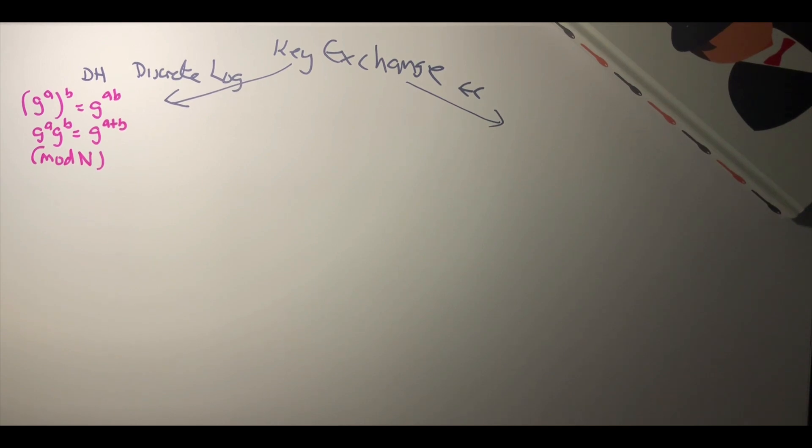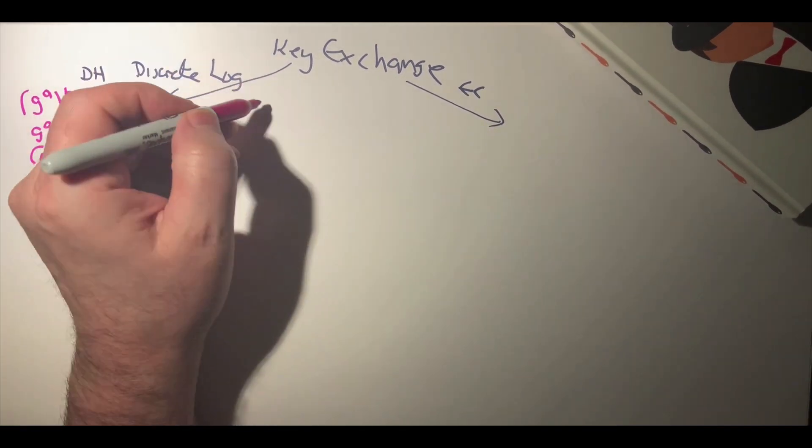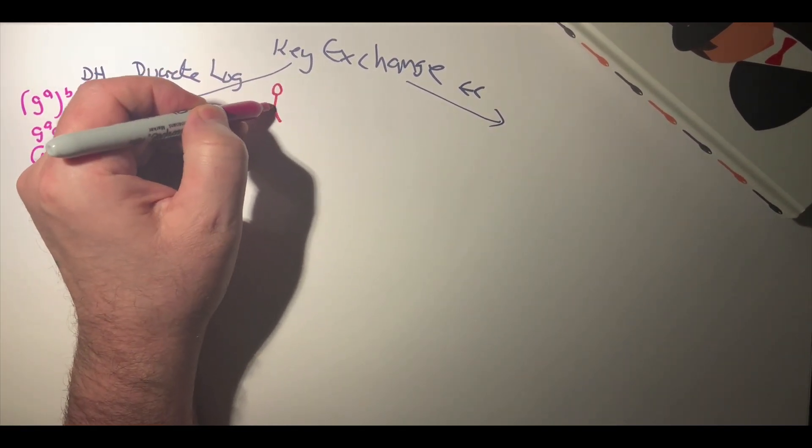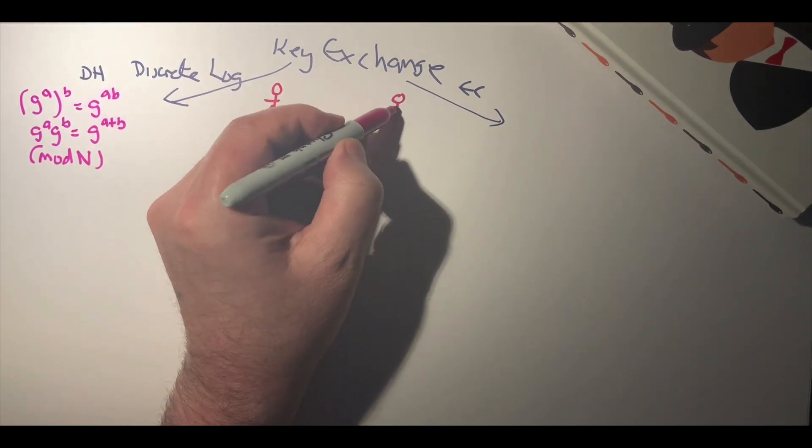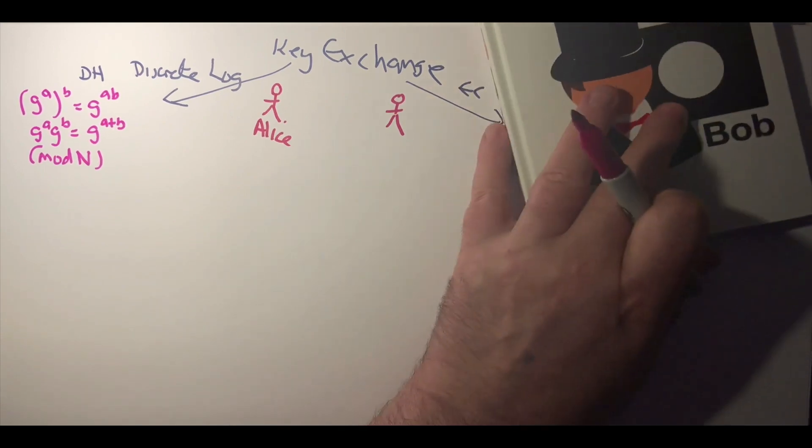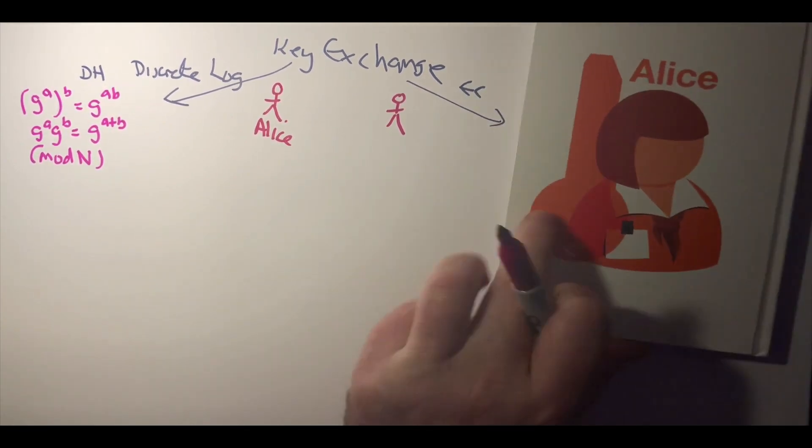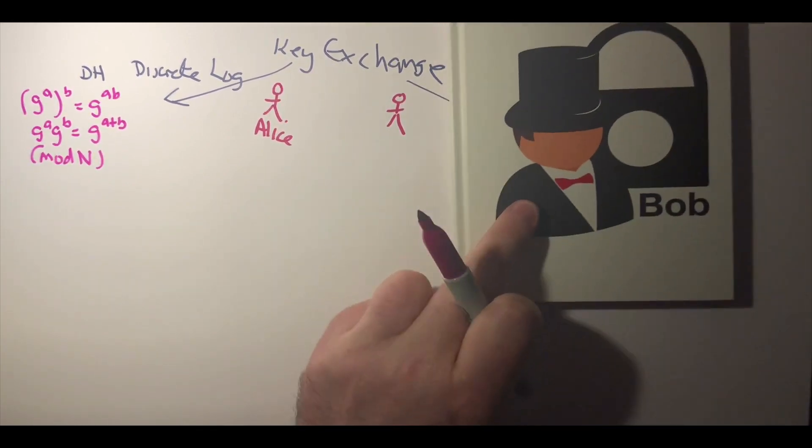Okay, so let's look at discrete logs. The problem that we have is how does Alice communicate with Bob? So we have Alice and Bob.